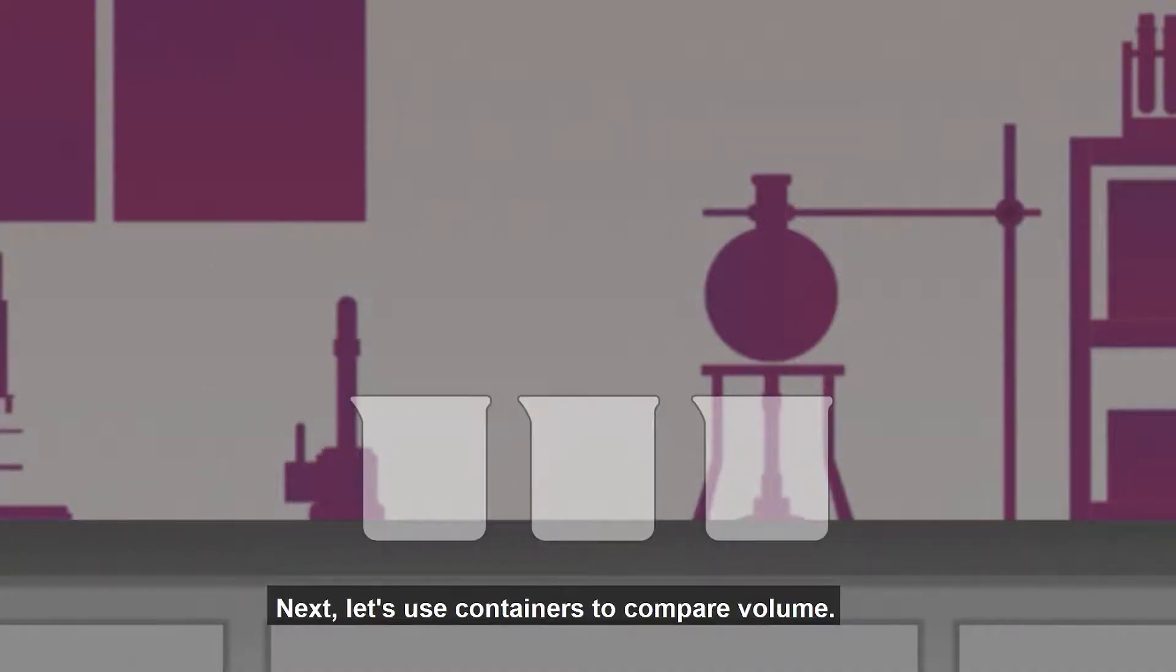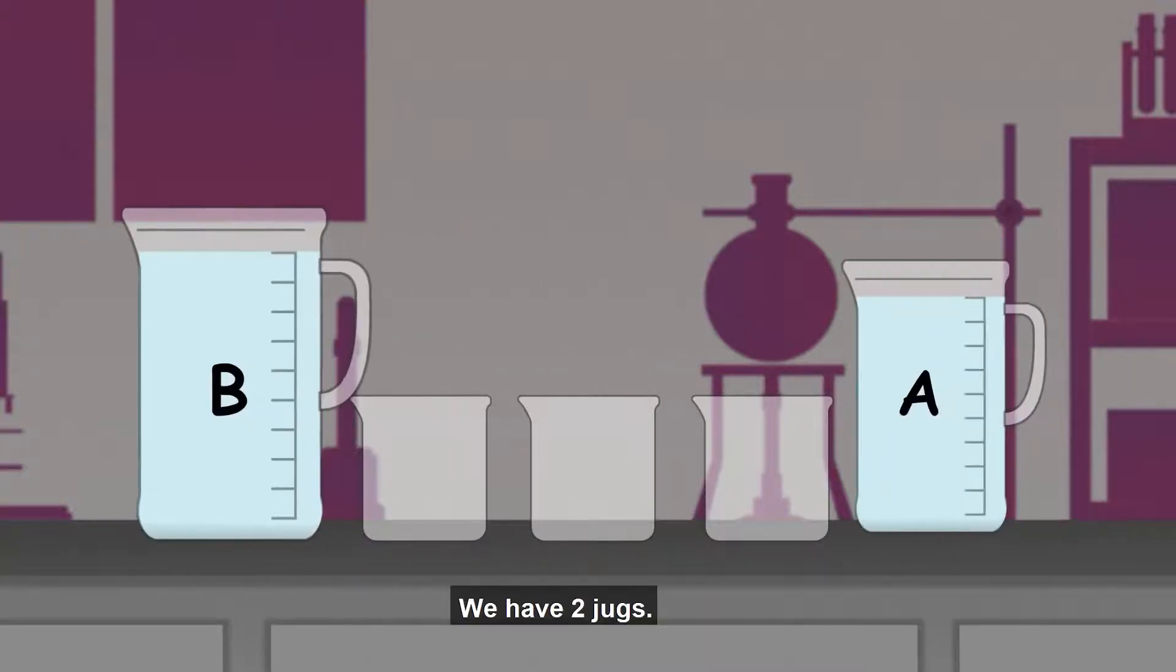Next, let's use containers to compare volumes. We have two jugs: Jug A and Jug B.